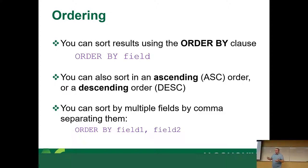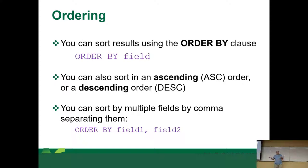The SQL command to sort the results of your SELECT statement is ORDER BY. You can sort ascending or descending. Ascending means from smallest to biggest; descending means from biggest to smallest. You can also sort by multiple fields using a comma: ORDER BY field1, field2, field3. Each subsequent field sorts within the previous sort.